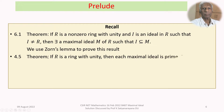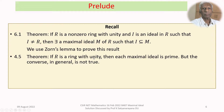We use Zorn's Lemma to prove this result. We have another theorem we are going to use: if R is a ring with unity — commutativity is not required here — then every maximal ideal is a prime ideal.